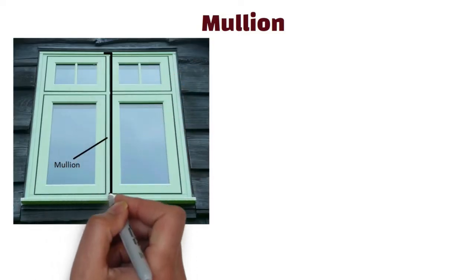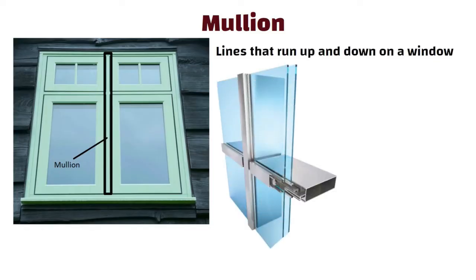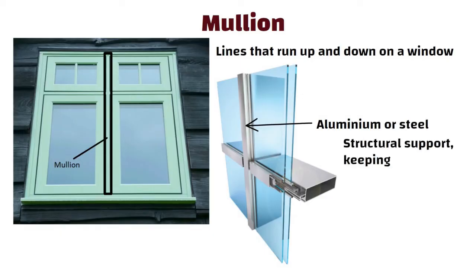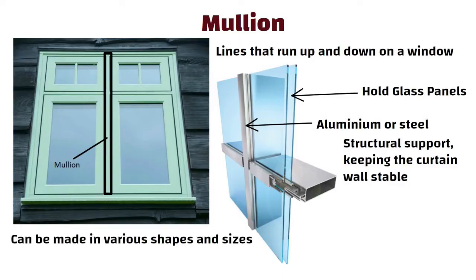Mullion. Mullions are vertical bars or columns in the curtain wall system — they are like the lines that run up and down on a window. They are generally made of aluminium or steel. Mullions provide structural support, keeping the curtain wall stable. They can be designed to hold the glass panels securely and can be made in various shapes and sizes to match the building's design.